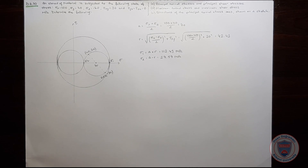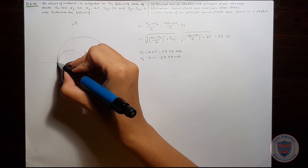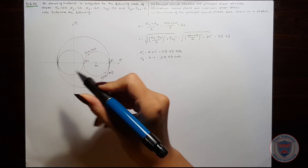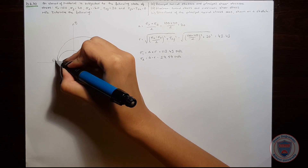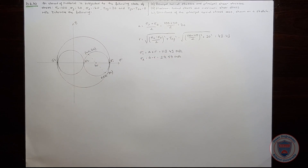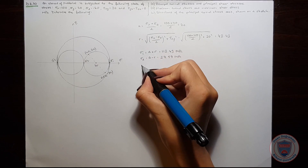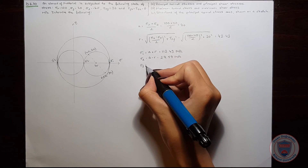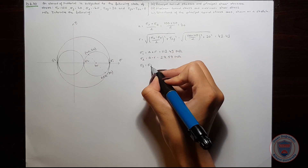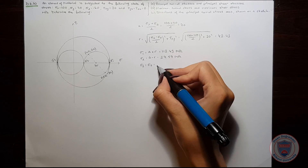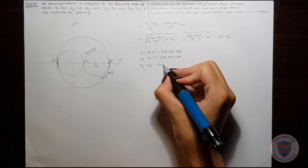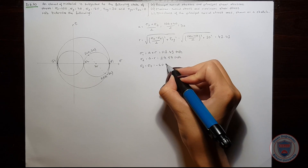Now, we know that sigma z is equal to minus 60, and it will be equal to sigma 3. So we get sigma 3 is equal to minus 60 MPa.